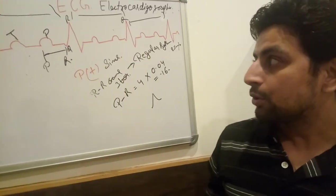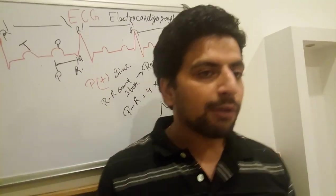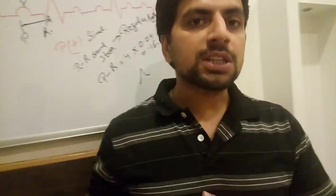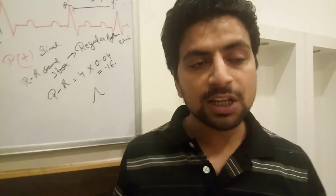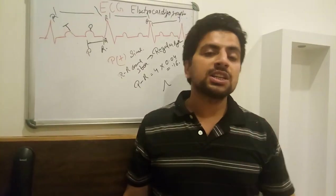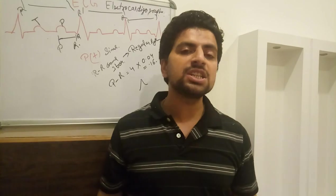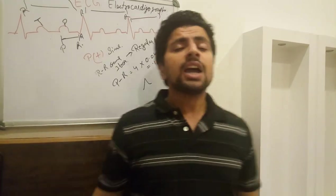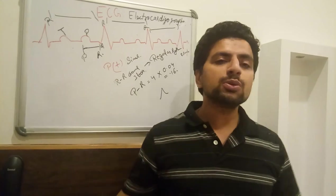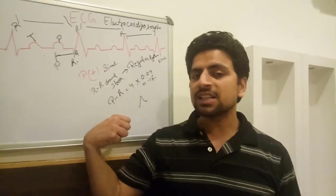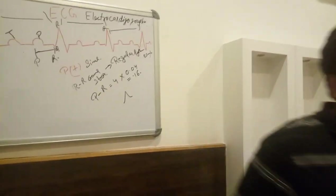ECG helps identify acute MI onset, ischemia, pulmonary embolism, and many other conditions, but further investigation is needed to confirm the diagnosis. If a patient comes to OPD or emergency with chest pain, don't just assume acidity — always do an ECG first. If you find any arrhythmia, try to correct it, call emergency services, and send the patient to hospital. If sinus rhythm is found, there is no immediate need to worry. Have a good day, thank you!